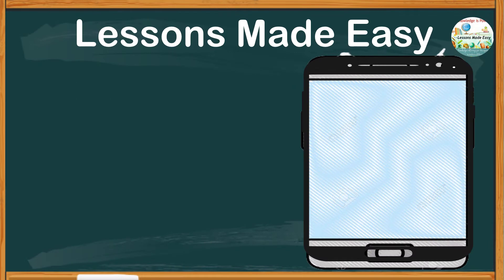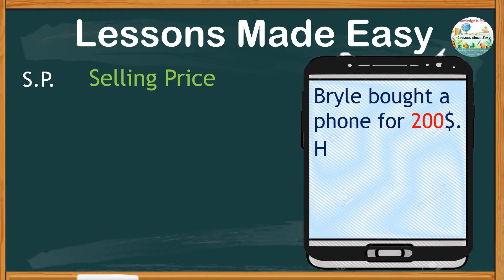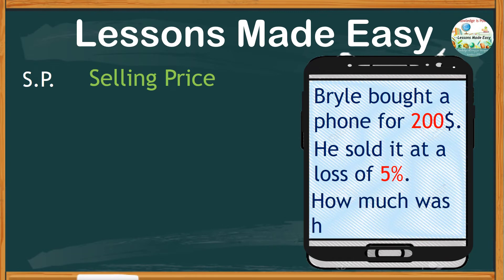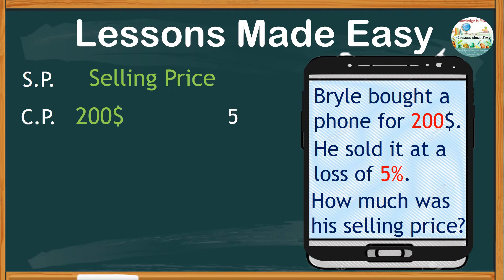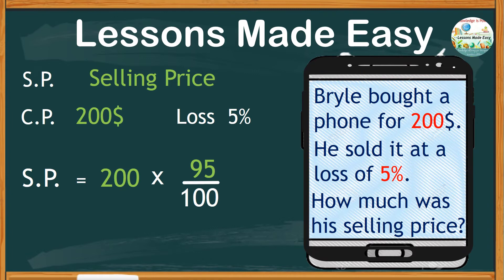Here is another problem, but this time instead of profit, find the selling price with a certain loss percentage. Brile bought a phone for $200 and sold it at a loss of 5%. How much was his selling price? The cost price is $200 multiplied by (100 − 5) over 100, which is 95 over 100. We cancel the two zeros above and below, leaving 2 times 95, which is 190. So the selling price is $190.